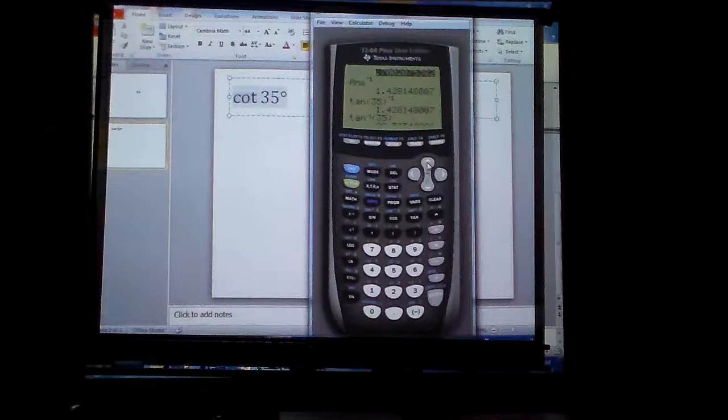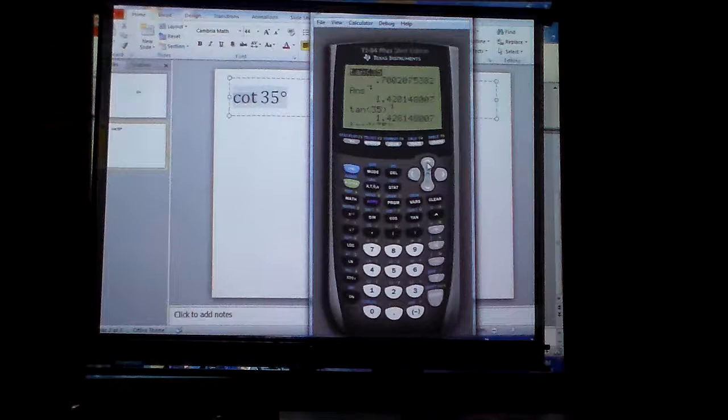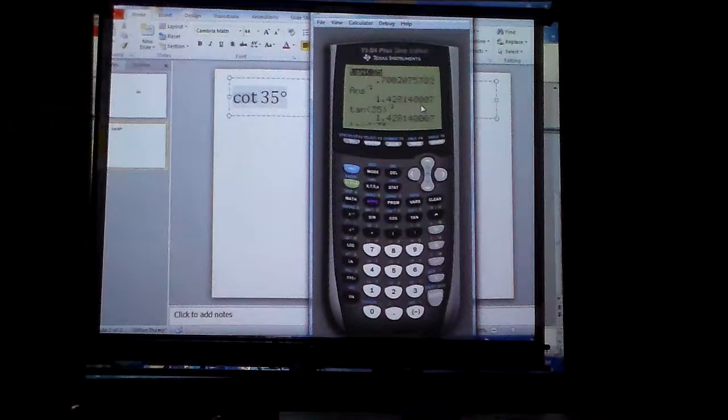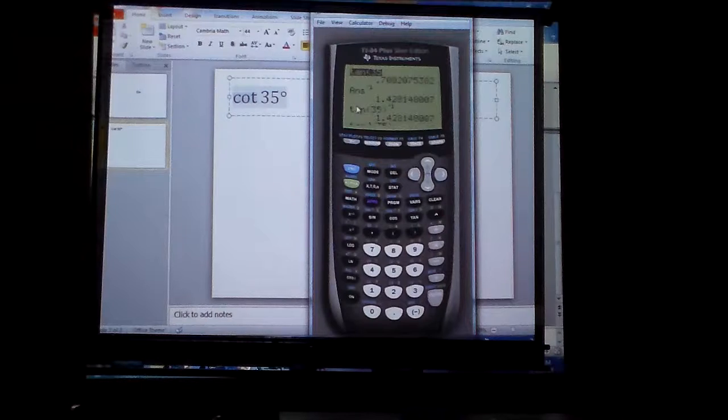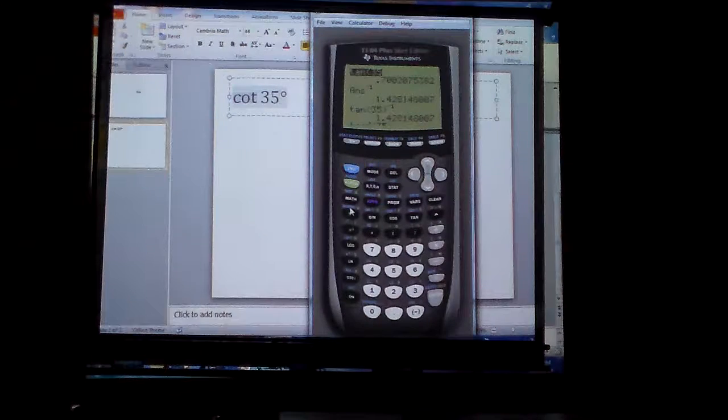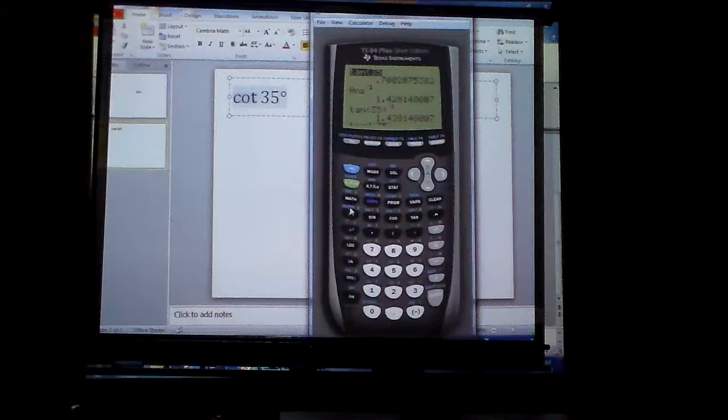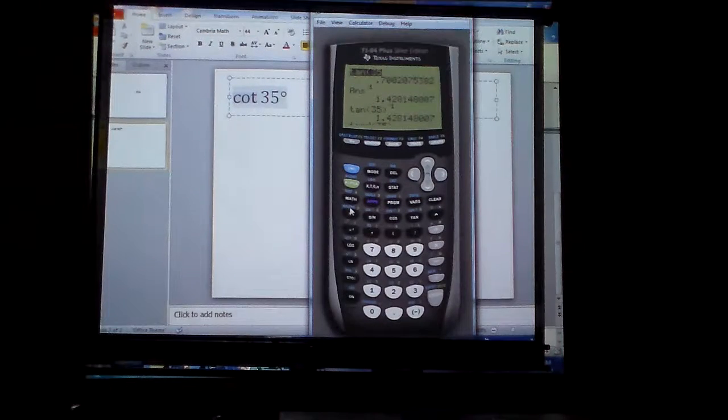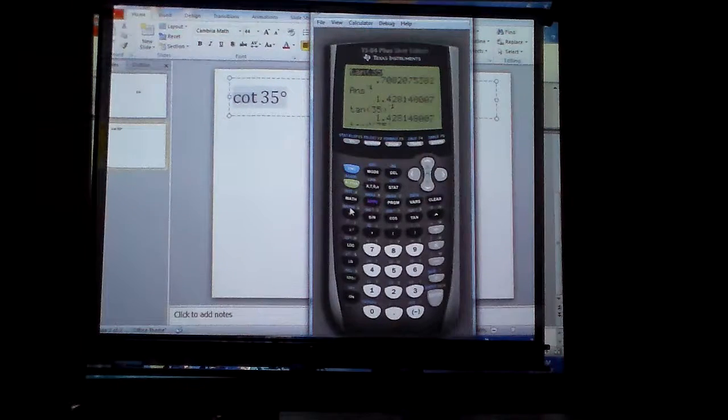if you want to get it correct, you cannot use the second tangent button. You must use the tangent button and then the X negative 1 button, otherwise you will not get the correct answer. The cotangent is the reciprocal of tangent, so you must work the problem that way using the tangent button.